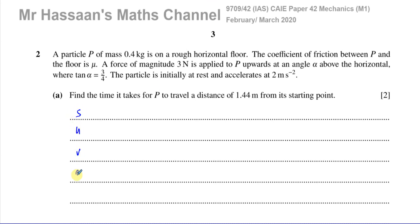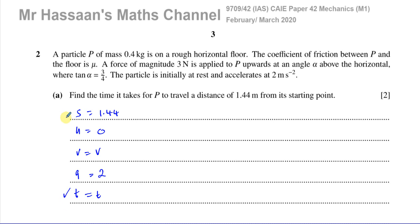Because it's going with constant acceleration, we can use SUVAT. S is 1.44 meters. U is 0 because it says it started initially at rest, so its initial speed is 0. It accelerates at 2 meters per second squared, so acceleration is 2. We want to find the time T. We have S, we have U, and we have A, so we have enough information to use one of the SUVAT equations.